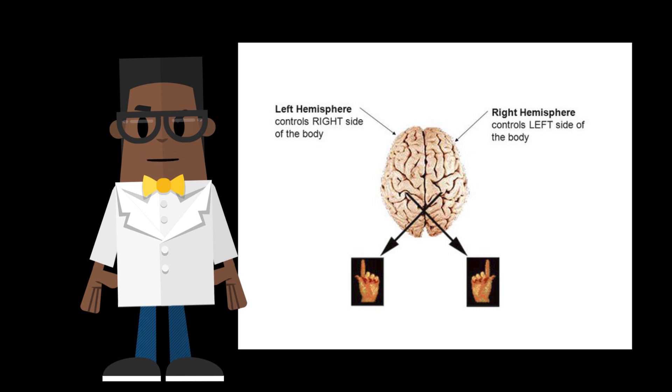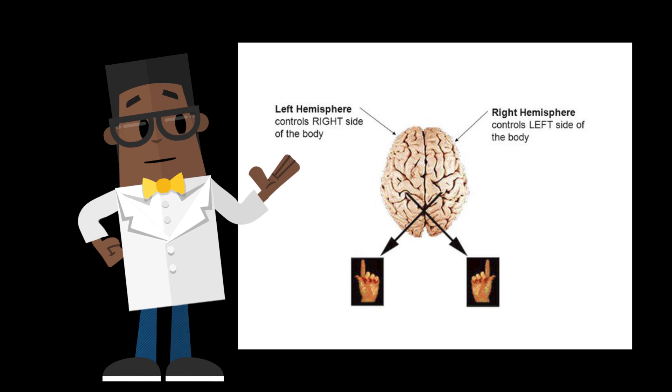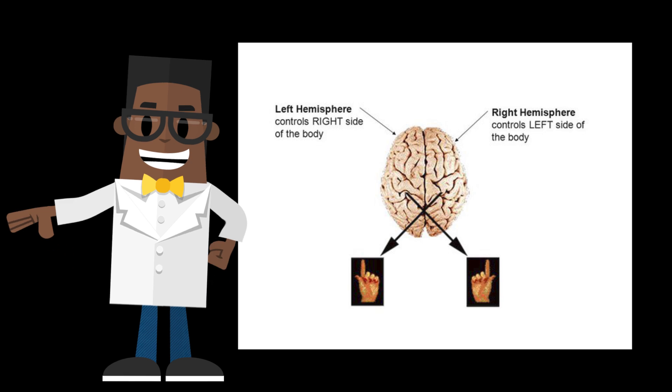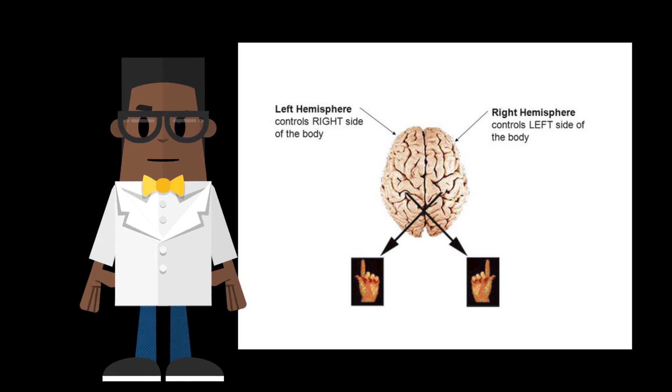The human brain serves contralateral functions, meaning that our left hemisphere receives sensory information and uses it to control the right side of the body, while the right hemisphere receives sensory information and uses it to control the left side of the body.